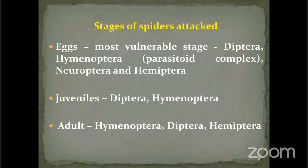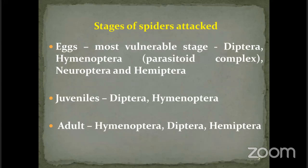The stages of spiders being attacked are almost all stages — eggs, juveniles, and adults. Of course, spiders do not have a pupal stage since they are not insects; they belong to class Arachnida. All stages of spiders — eggs, juveniles, and adults — are being attacked by these natural enemies.